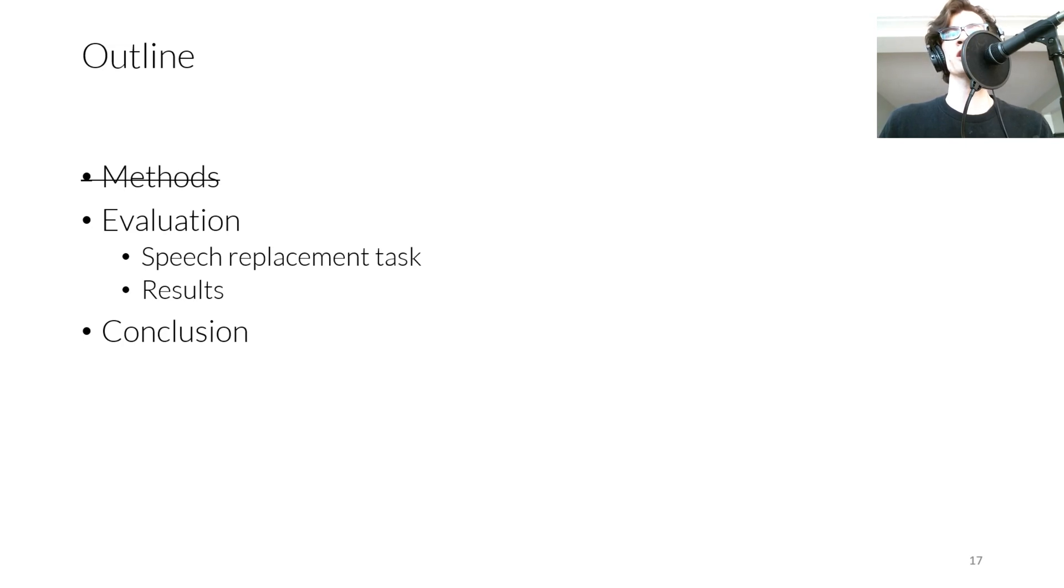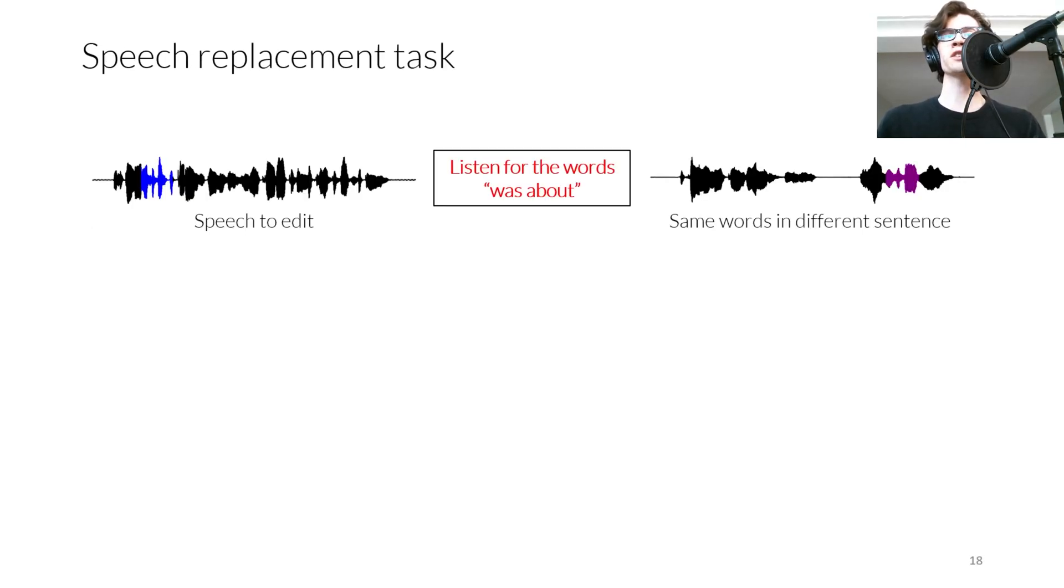Next, let's discuss how we can evaluate our prosody correction system. To evaluate prosody correction, we propose a speech replacement task. First, we find two sentences containing the same phrase. Listen for the words was about in the following two sentences. Here's the sentence we're going to edit. The phrase was about is highlighted in blue. The steamer was about to put on steam again when I called out to them that they had forgotten to pay me. Now here's another sentence, also containing the phrase was about, as highlighted here in purple. The family moved to Indiana, he went on, when Abe was about nine.